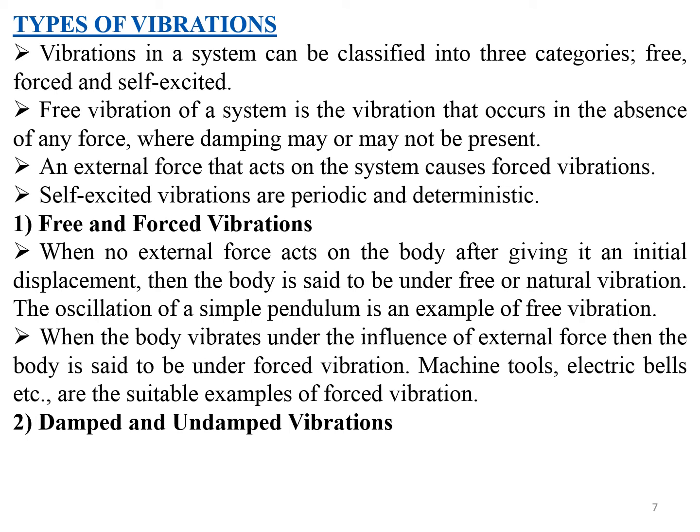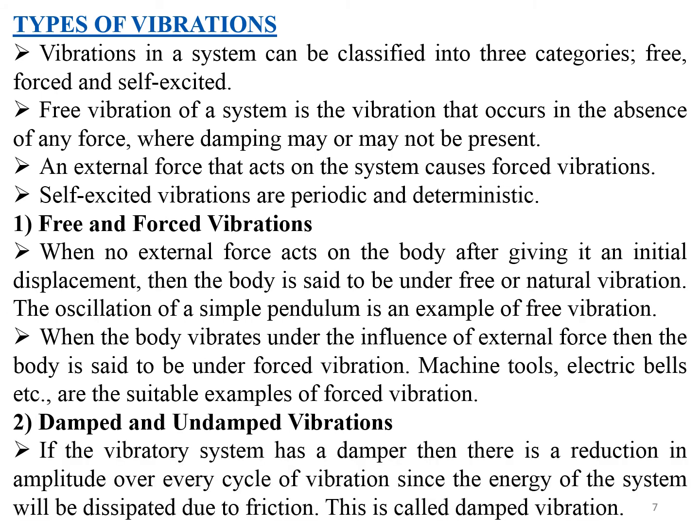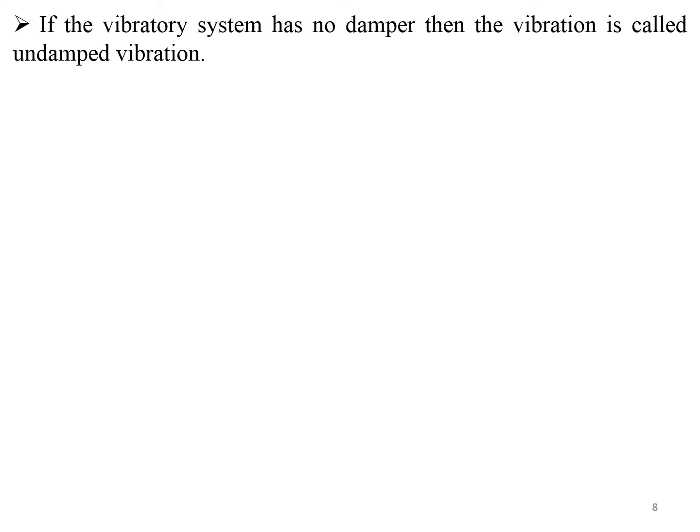Damped and undamped vibration: if the vibratory system has a damper, there is a reduction in amplitude over every cycle of vibration since the energy of the system is dissipated due to friction — this is called damped vibration. If the vibratory system has no damper, then the vibration is called undamped vibration.